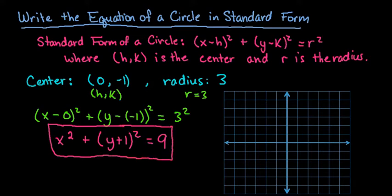As far as graphing it goes, all you have to do to graph a circle is you would start with the center, so we would go to 0, negative 1. So that would be right here, this would be our center of our circle.